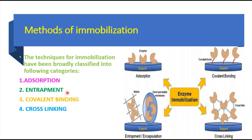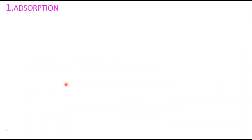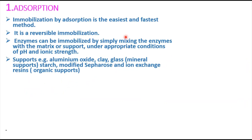Adsorption is where we take a support or carrier matrix, fix our enzyme to it, and pass whatever substrate we want to convert into the product through it. The enzyme remains fixed at that position. Let's discuss the first method, adsorption, in detail.